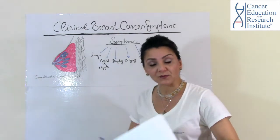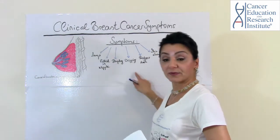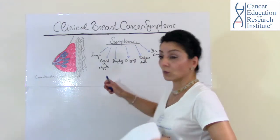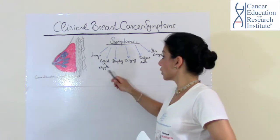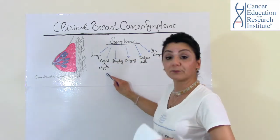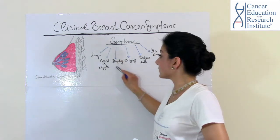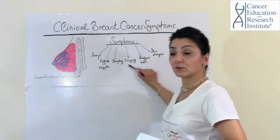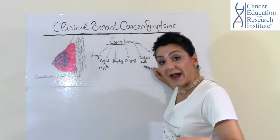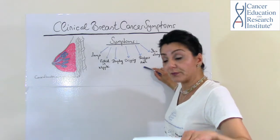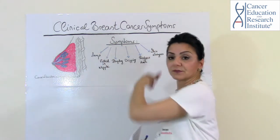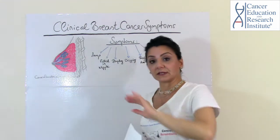Now let's talk about the symptoms of breast cancer. I will go through the symptoms in a simplified way and then dive deeper. If you see a lump, that is a symptom of breast cancer. If you see a pulled-in nipple, a dimpling of the skin, a dripping from your nipples, redness or rash on the skin of your breast, or any skin changes — those are all symptoms of breast cancer. Now let's dive deeper into them one by one.